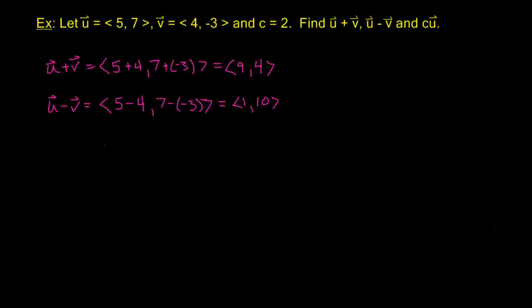Alright, one more, cu. Here's cu, that's just 2u, so my c is 2. And what we do here is we take our scalar, we're multiplying to the vector, and we multiply it by each component. So this is going to be 2 times the horizontal component 5, 2 times the vertical component 7. And so we get this vector 2u is equal to the vector <10, 14>.